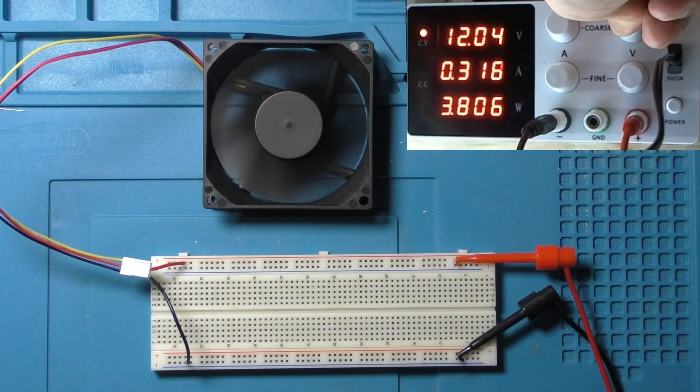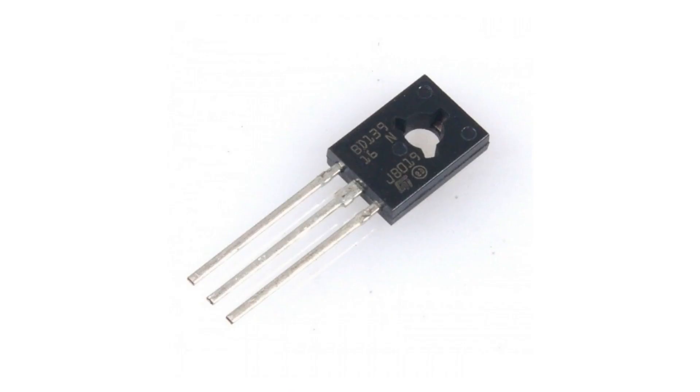To control the speed of the fan we have two options. We can limit the voltage or we can limit the current. Today we're going to limit the current and we're going to do it with one of these. This is a BD139 transistor.